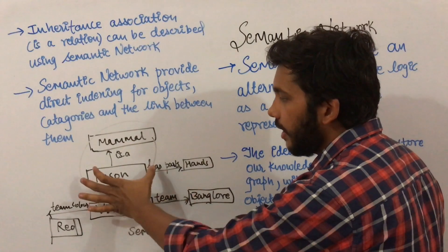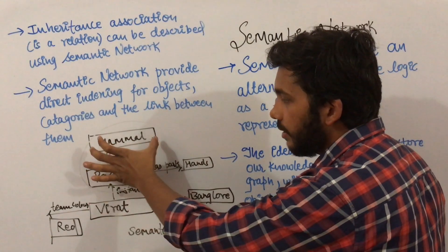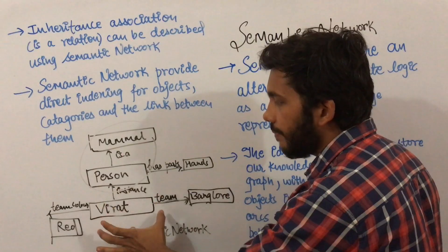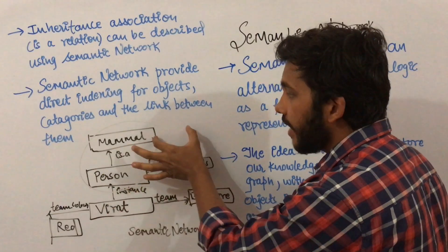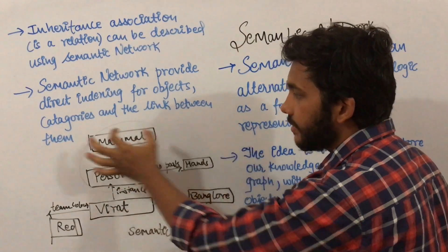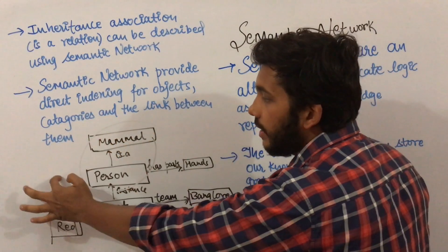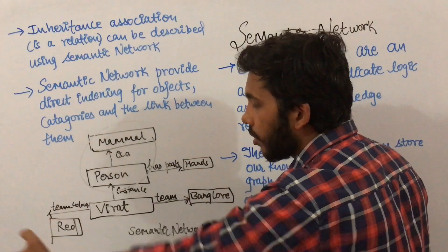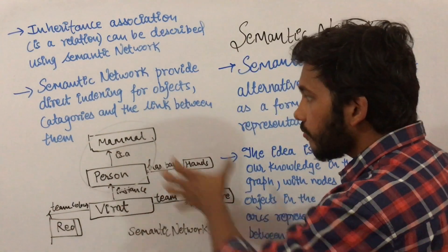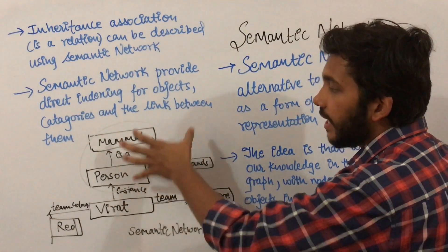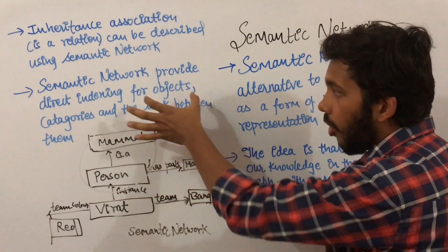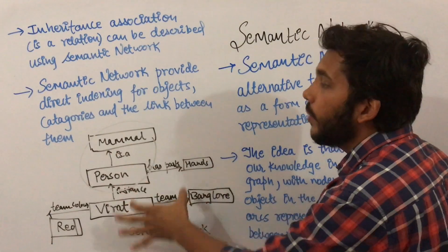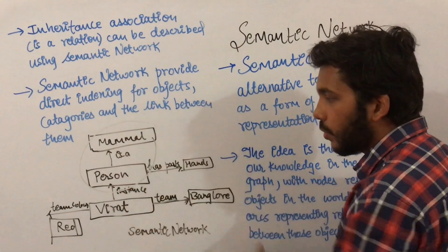We can categorize that mammal has persons, and person can be Virat. We can also categorize that mammals have animals, and animals can be dog. So we can categorize objects into different categories and link between them.